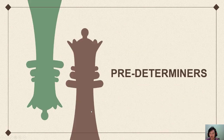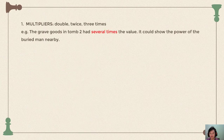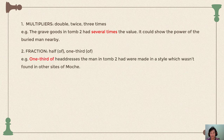We still have predeterminers. The first is multipliers: double, twice, three times, etc. Multipliers are used to multiply a quantity. Example: 'The grave goods in tomb 2 had several times the value — it could show the power of the nearby man.' Here 'the value' is multiplied several times.